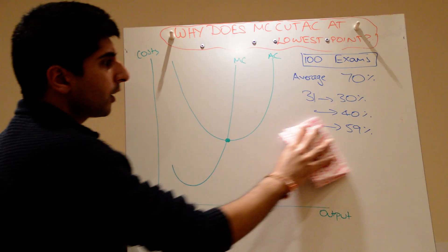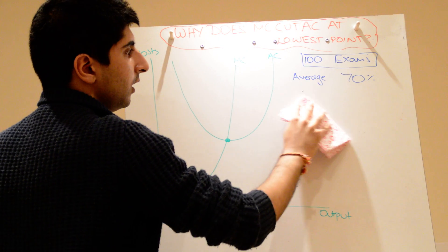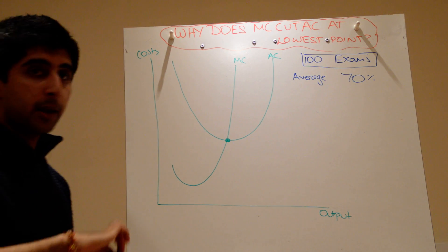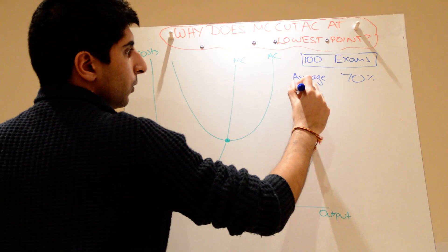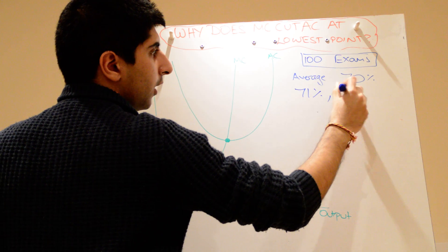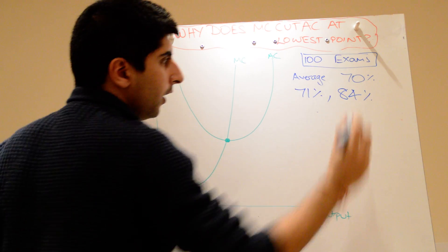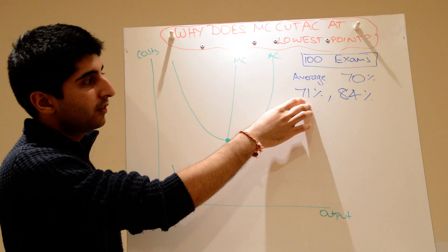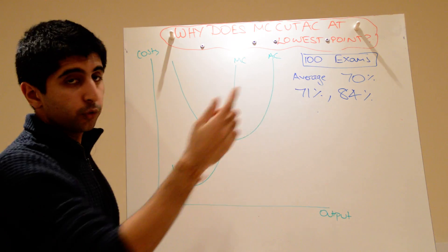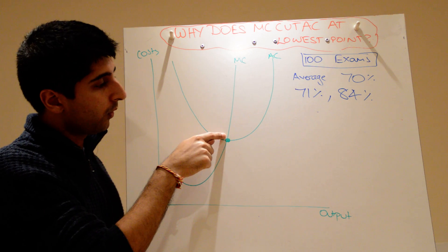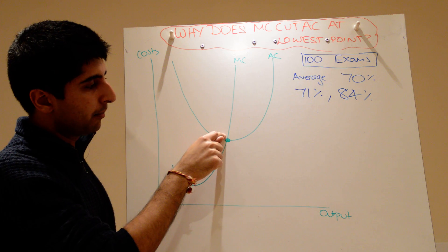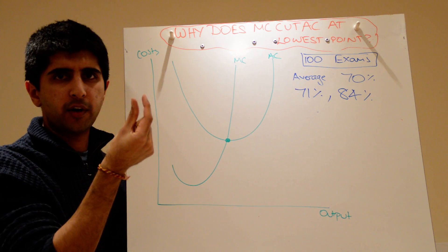Similarly, let's go the other way. Let's go back to the start, and let's say that your 101st paper got you a score of 71%, and that your 102nd paper got you a score of 84%. Right. Your marginal exam, which is the 101st one, you scored 71%. Well, that marginal score is slightly more than the average of 70. Just slightly more. But more than the average, it's going to pull the average up very, very slightly.